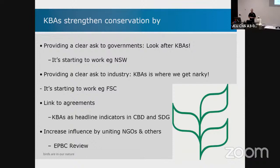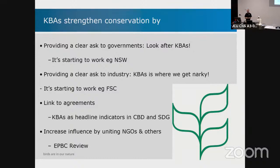It's also providing a clear ask to industry. KBAs are where conservation organizations are going to push back. Things like the Forest Stewardship Council are pegging back to key biodiversity areas. Even the equator principles — the guidelines for ethical lending for the four big banks — are pegged in with IBAs and KBAs. And of course it's linked to agreements — the Sustainable Development Goals — and we're currently working on trying to get it into the CBD, the Convention on Biological Diversity, as a headline indicator.